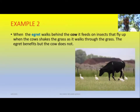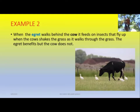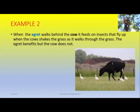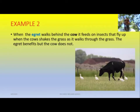Another example is egrets walking behind cows. The egret feeds on the insects that fly up when the cow shakes the grass as it walks through it. You may have noticed this driving past a pasture — in Jamaica we call them 'golly birds.' When they're walking behind the cow, because the cow walks through the grass and insects jump up, the egret gets to catch them. The cow is not benefiting from the egret walking behind it, but the egret is benefiting by catching insects — another case of commensalism.